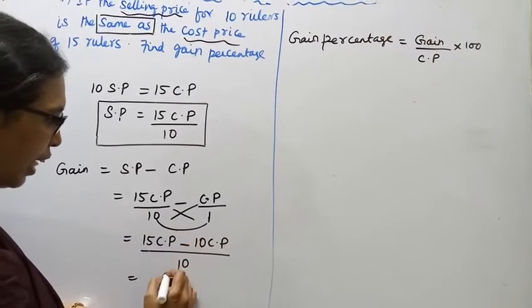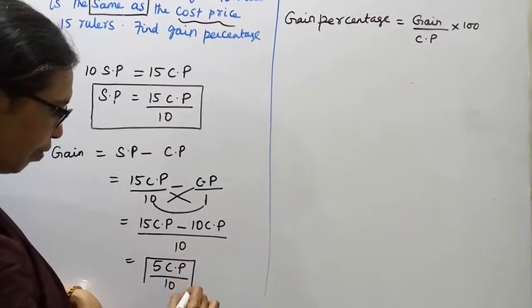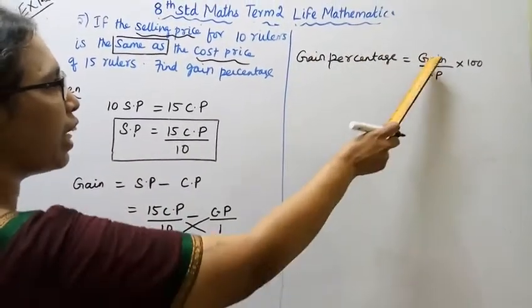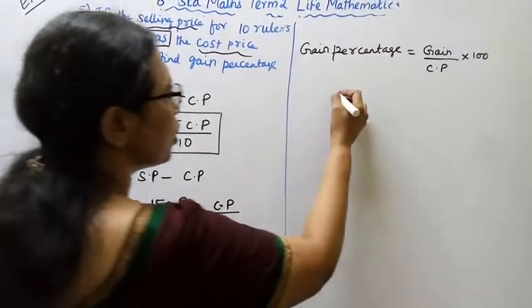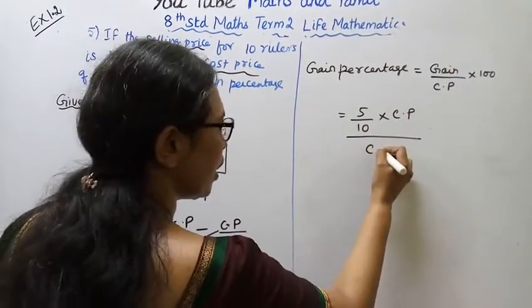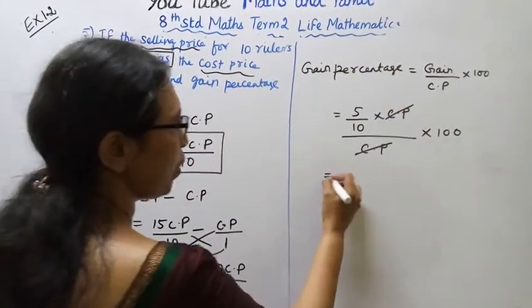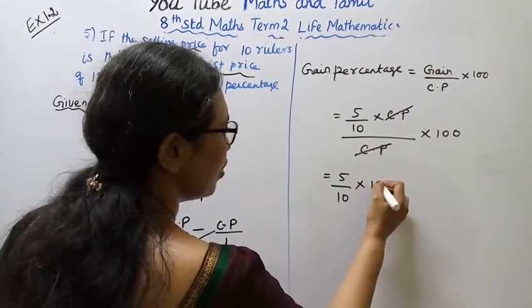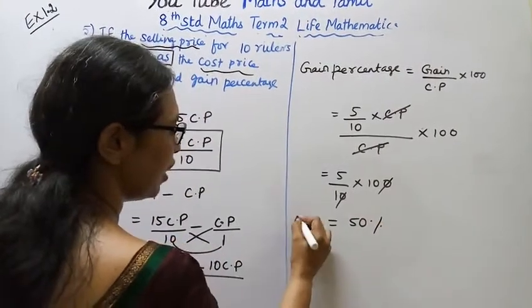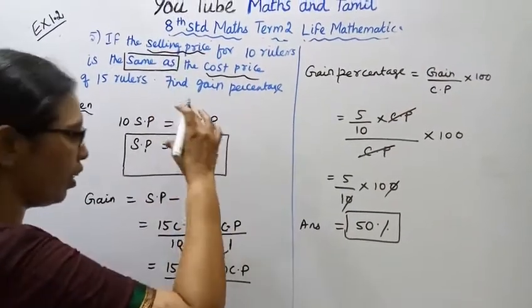So gain equals 15 cost price minus 10 cost price, divided by 10, which is 5 cost price divided by 10. Gain percentage equals gain by CP into 100 — the cost price cancels, giving 5 by 10 into 100. The zeros cancel, therefore gain percentage equals 50%.